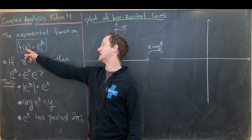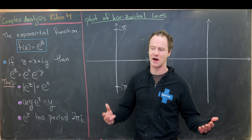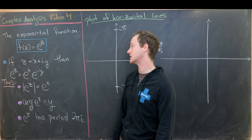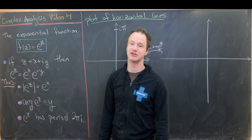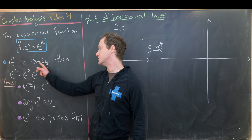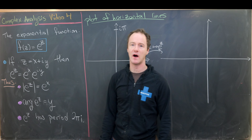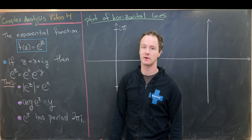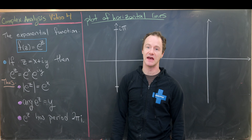We'll start with the exponential function — the function that takes z and gives us e to the z, where e is Euler's constant. If we decompose z into real and imaginary parts as x plus iy, then e to the z using exponent rules is e to the x times e to the iy. Since e to the iy is on the unit circle and e to the x is a real number, the modulus of e to the z is e to the x.